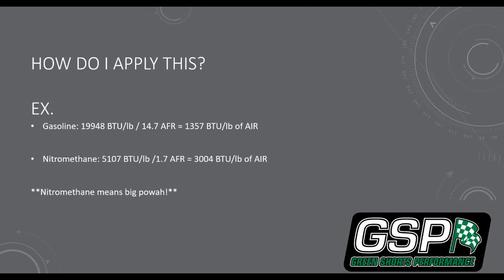You're getting way more energy per unit of air. Because nitromethane is 1.7 to 1, you can run a ton of it. Yes, on a BTUs-per-pound basis it's only about 51% — a fraction of what you get from gasoline — but you can't run that much gasoline to get the equivalent energy out. Obviously you're not going to your local nitromethane station to fill up your car, so you're not running anything on the street on nitromethane. But it puts things into perspective when you run the math on different fuels.